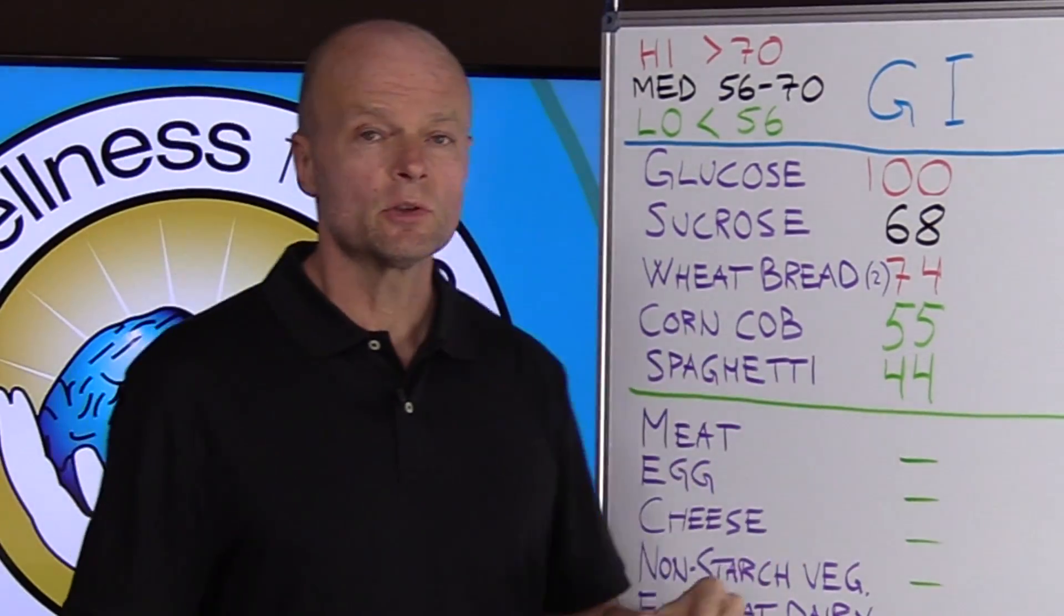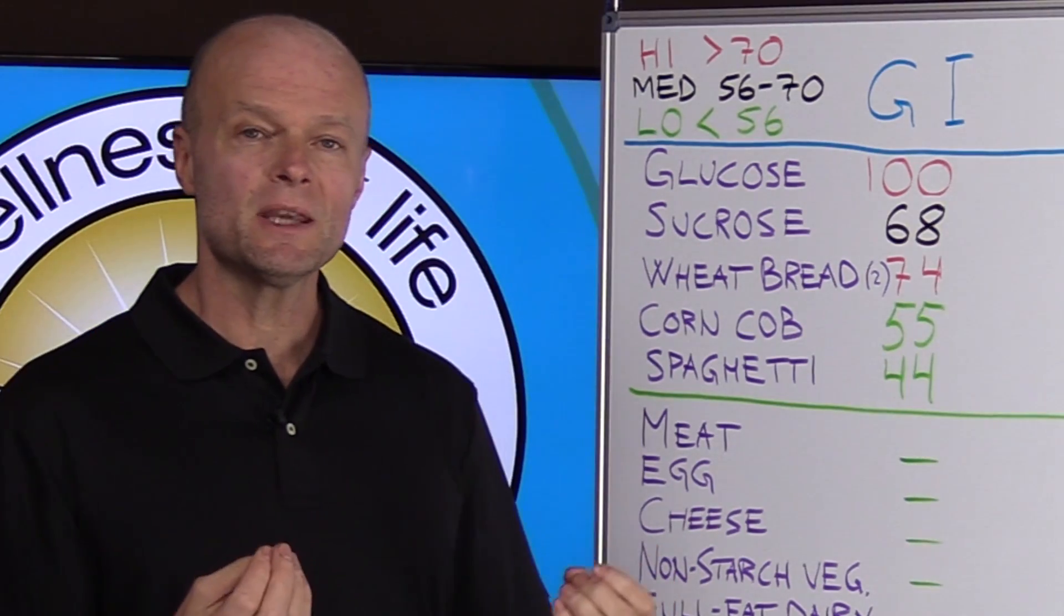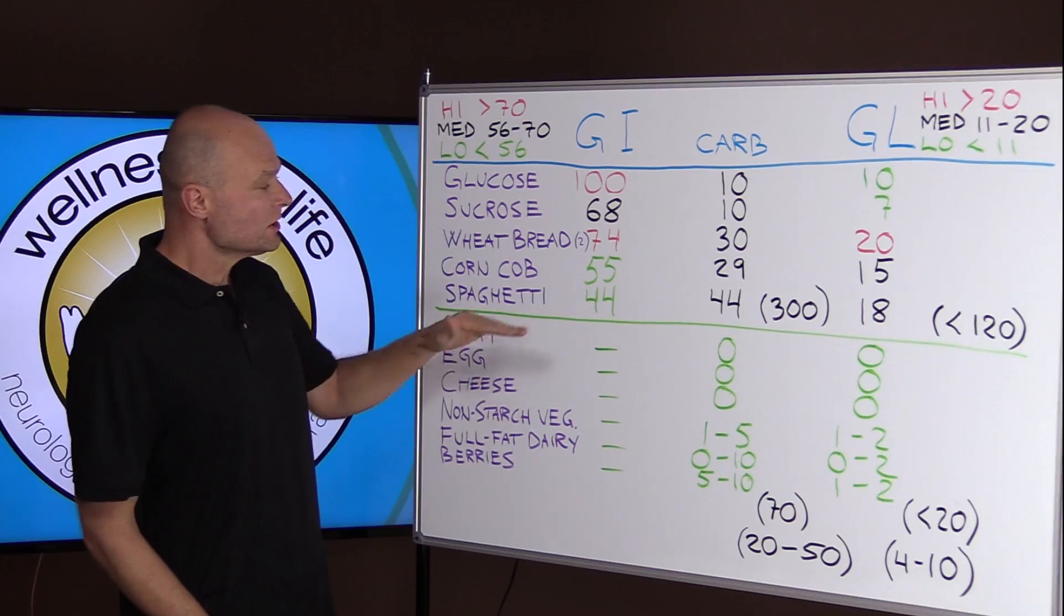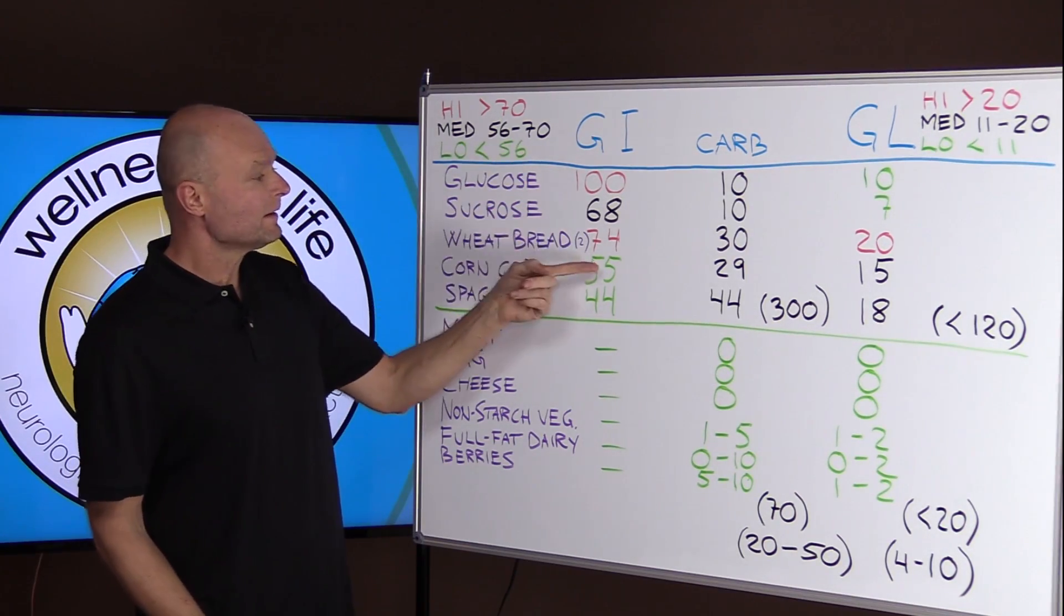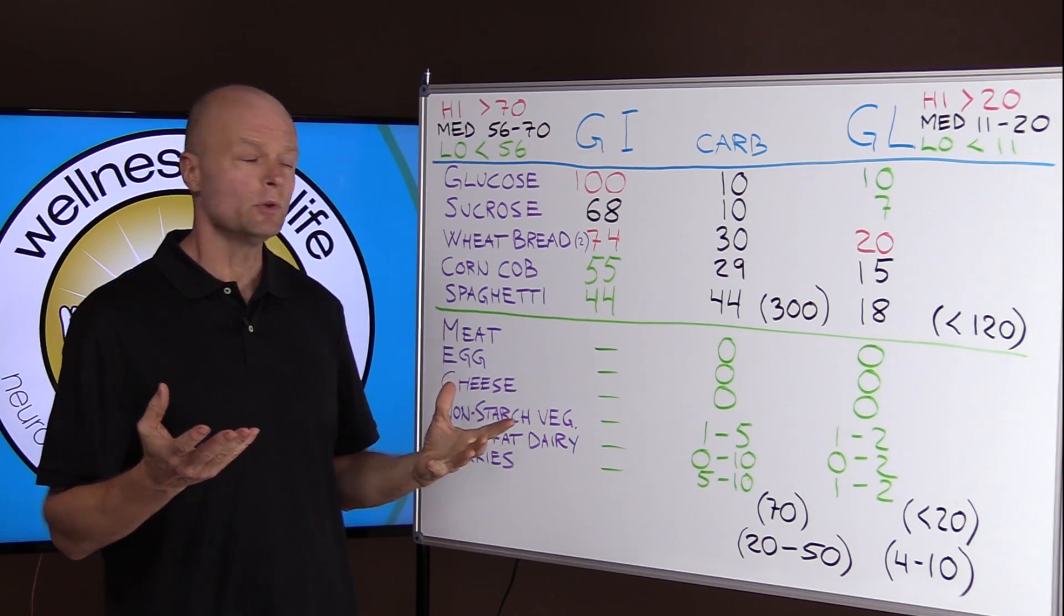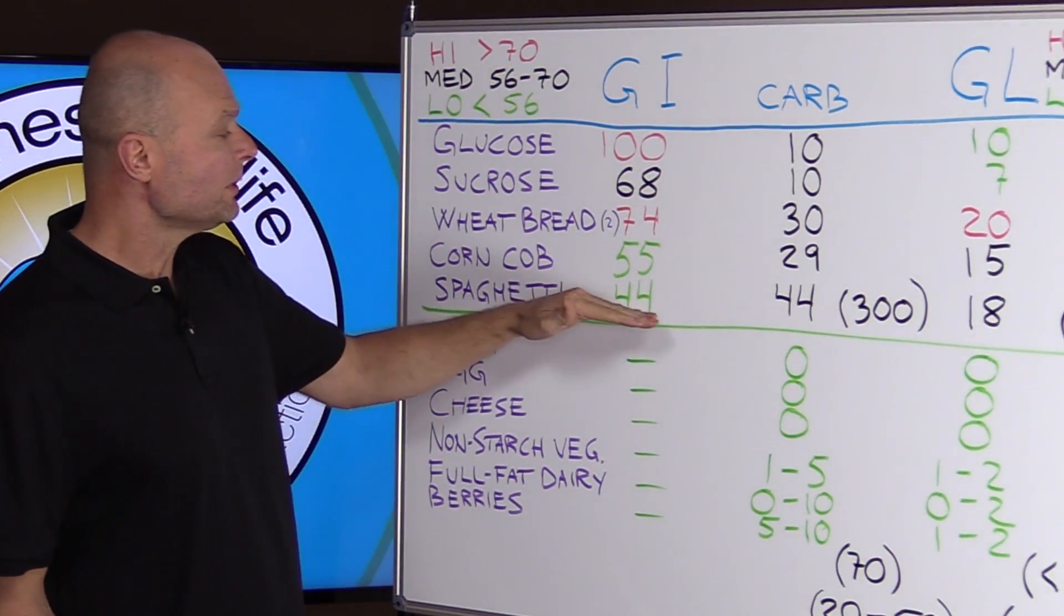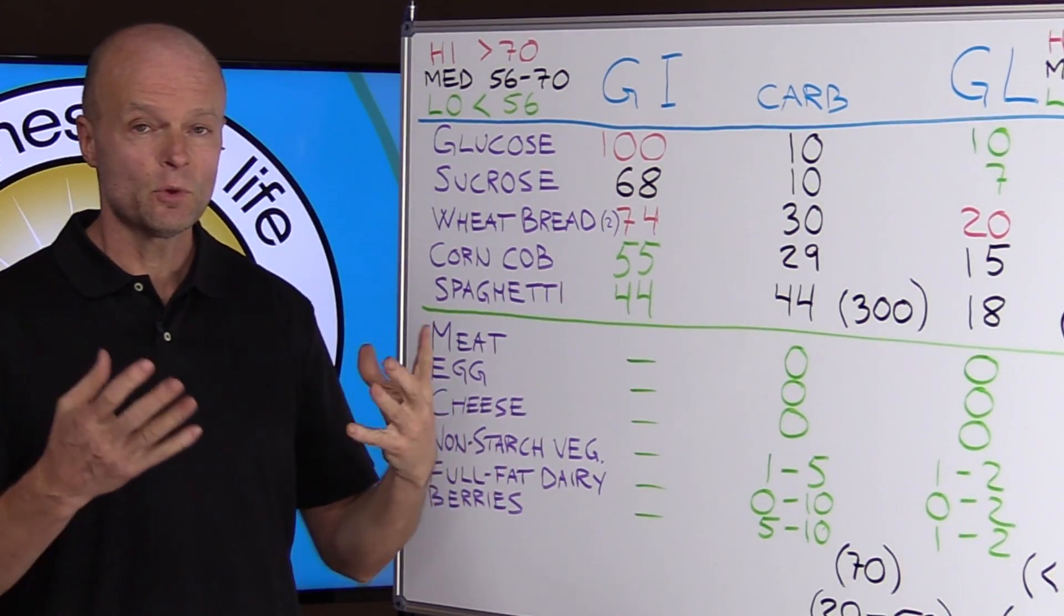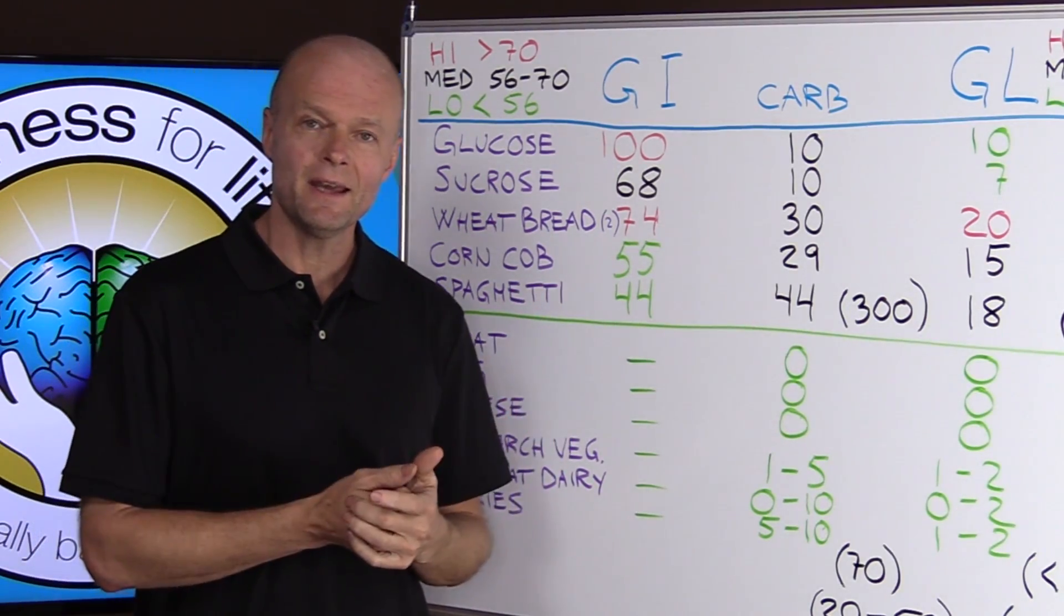Then you look at corn. Corn on the cob has a glycemic index of 55. So according to this scale, that looks like a virtual health food. And spaghetti, a complex carbohydrate, is 44. So again, is that a health food?